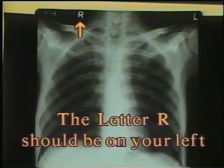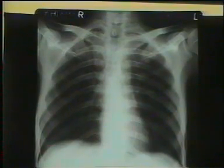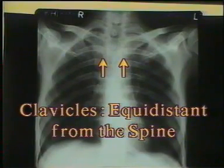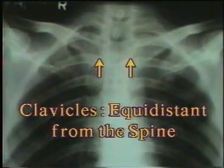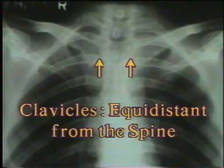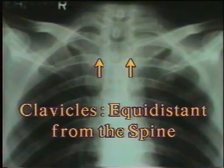Then confirm that it is well centralized and well exposed. In a well centralized film, the medial ends of both clavicles are equidistant from the spine. If they are not, then you cannot make any comment on the mediastinal shift, cardiomegaly, or on comparative radiolucency of the lung fields.